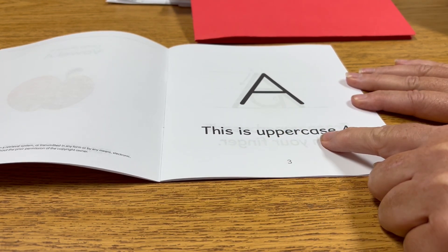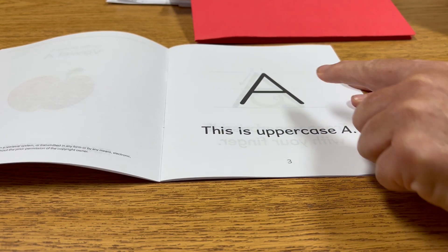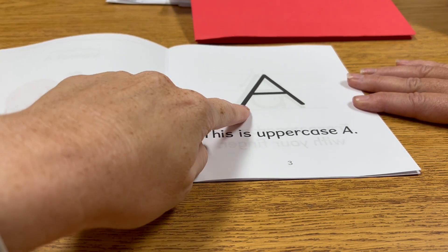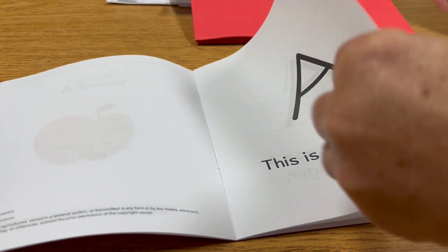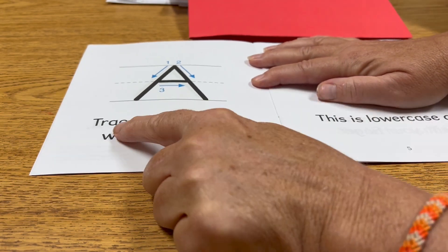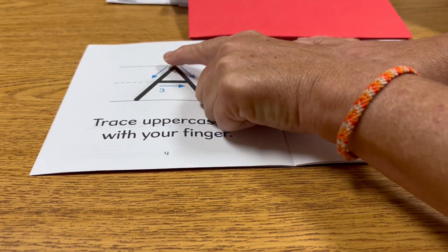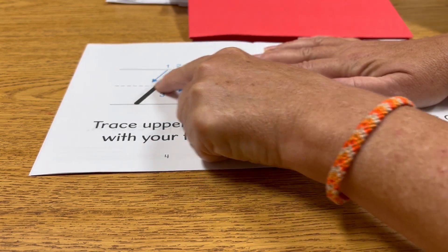This is uppercase A. What letter is that? A. Can you point to that letter? A. Good. I'm going to read, trace uppercase A with your finger. So we go one, two, three.